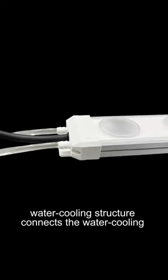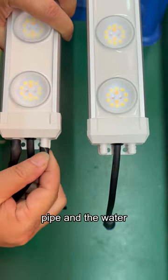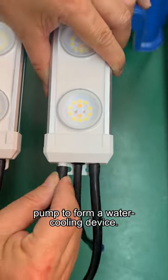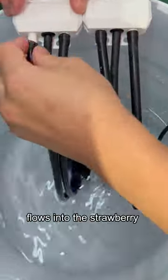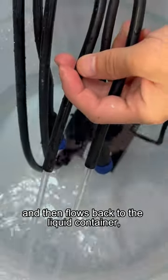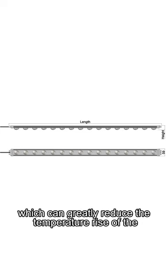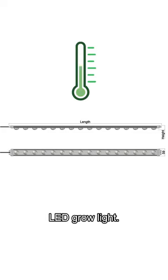The newly designed water-cooling structure connects the water-cooling pipe and the water pump to form a water-cooling device. The water pump draws the liquid in the container, flows into the strawberry grow light body through the hose, and then flows back to the liquid container, which can greatly reduce the temperature rise of the LED grow light.